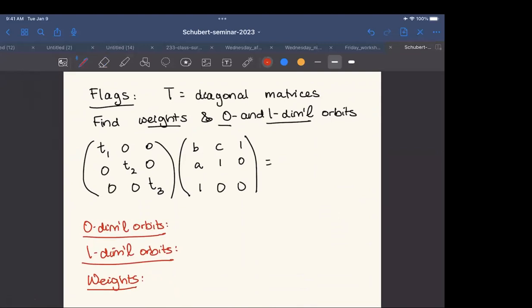So back to flags for a second. Here, and really for the rest of the talk, when I think of my torus, I think of diagonal matrices. So we can just inspect what are the weights and zero and one-dimensional orbits in the flag variety. To do this, I'm actually just going to multiply matrices. So I think that I'm multiplying this correctly. I'm going to count on my esteemed audience members to correct me if I'm not. So I just multiplied. And the issue, as I see it, is that this matrix on the right is not in my preferred form. On the other hand, I can do some Gaussian elimination.